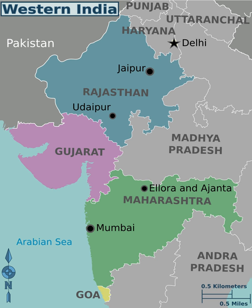The rivers in this region are the Mahi, Narmada, Tapi, Godavari, Zuari, Mandovi, Krishna, Ghaggar, Chambal, and many other smaller tributaries of other rivers.